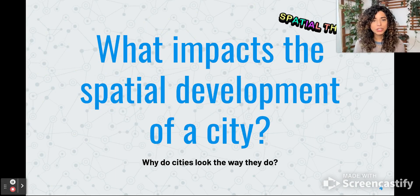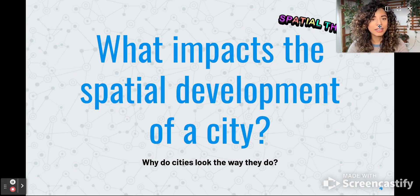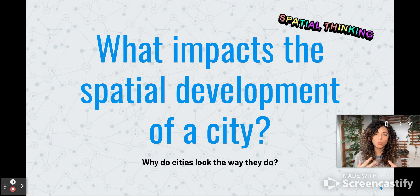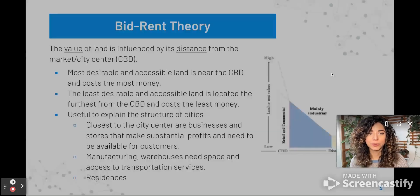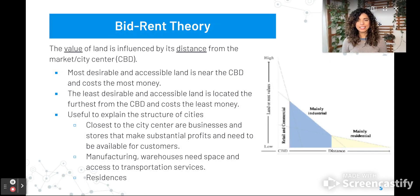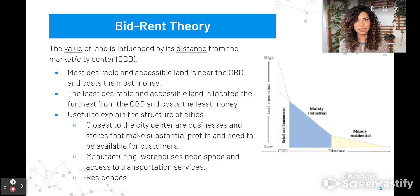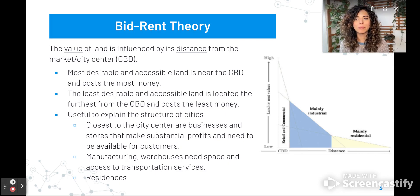What impacts the spatial development of a city? We're using spatial thinking and asking ourselves: why do cities look the way that they do? Bid-rent theory — this underlying concept should be familiar from the previous unit. Similar to Von Thünen's basic theories, we have bid-rent theory. Essentially, the value of land is influenced by its distance from the market or the city center, which is also called the CBD.